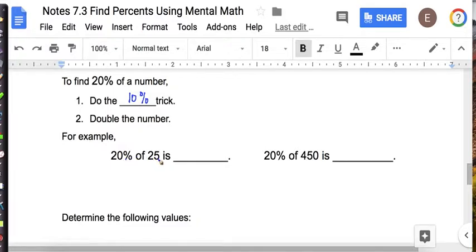I want 20% of 25. So the 10% trick tells me that it's 2.5. And because I want 20%, I need to double it. And 2.5 times 2 is 5. Or 2 and 5 tenths times 2.